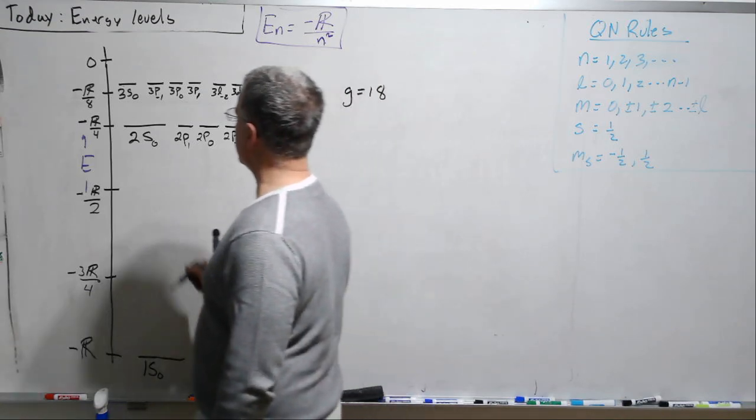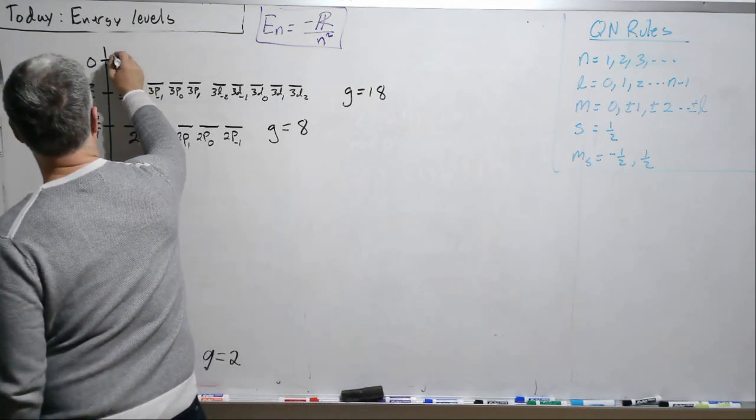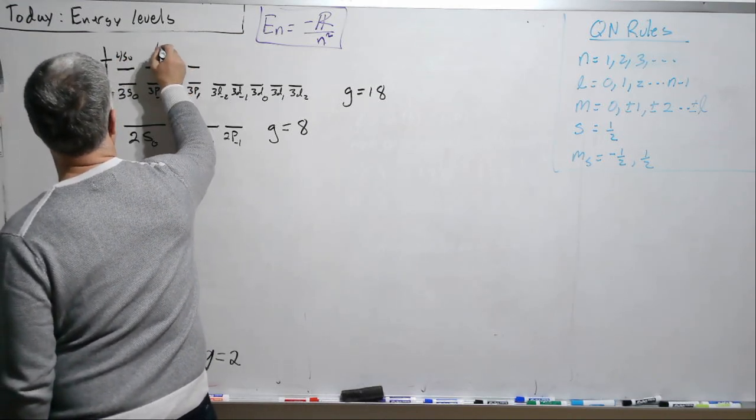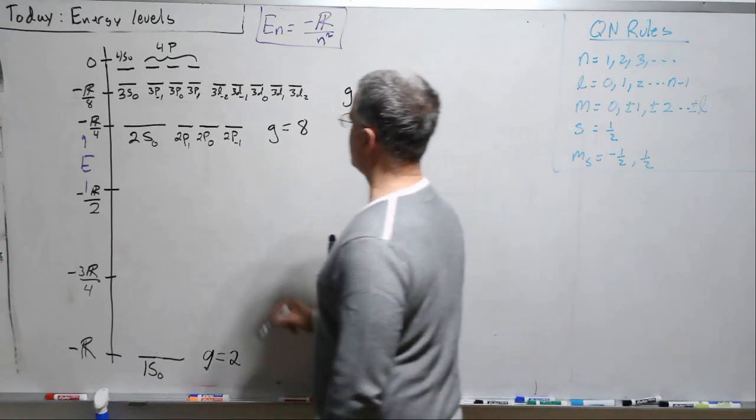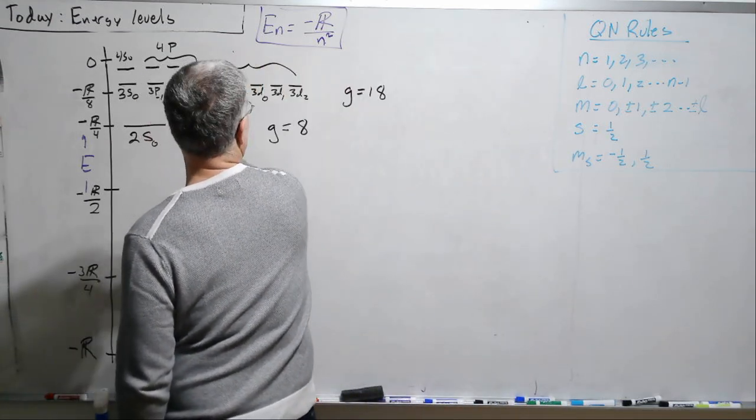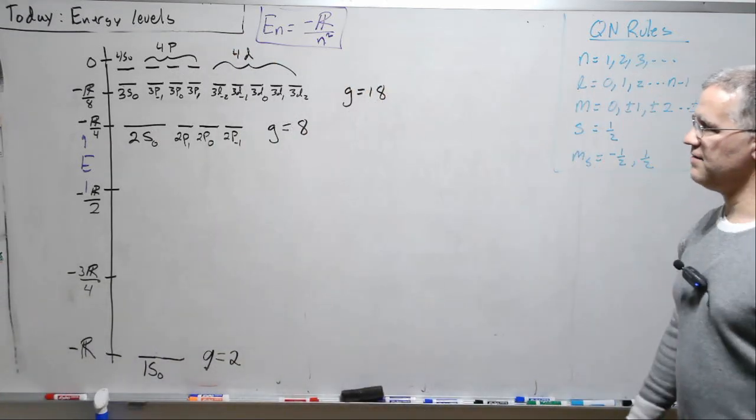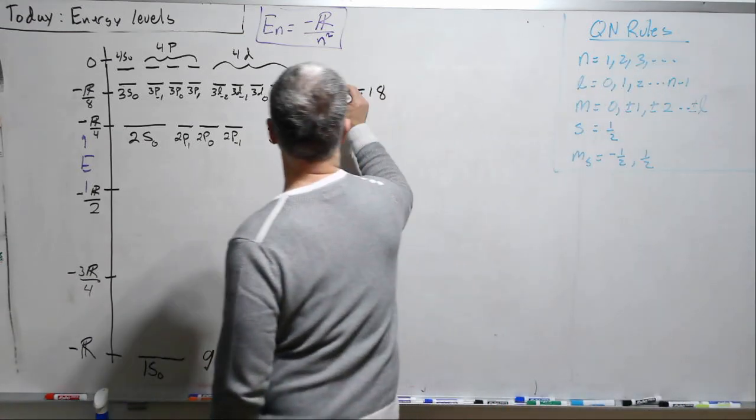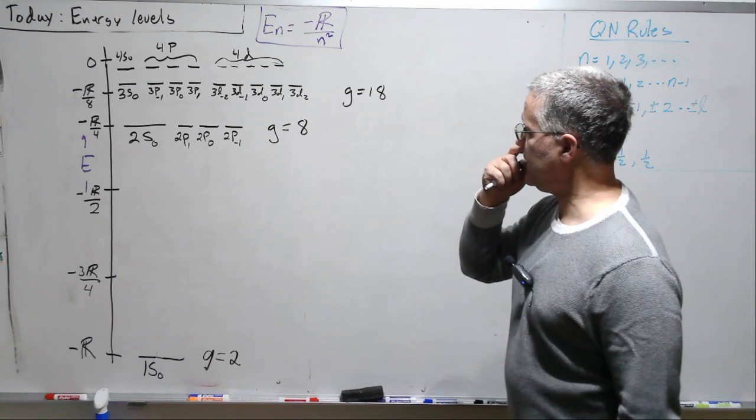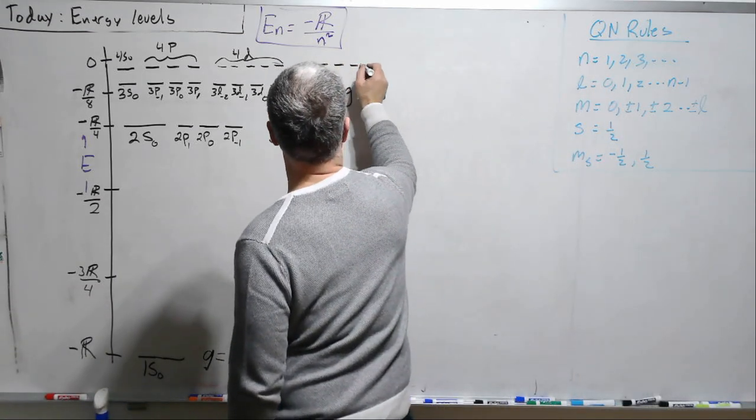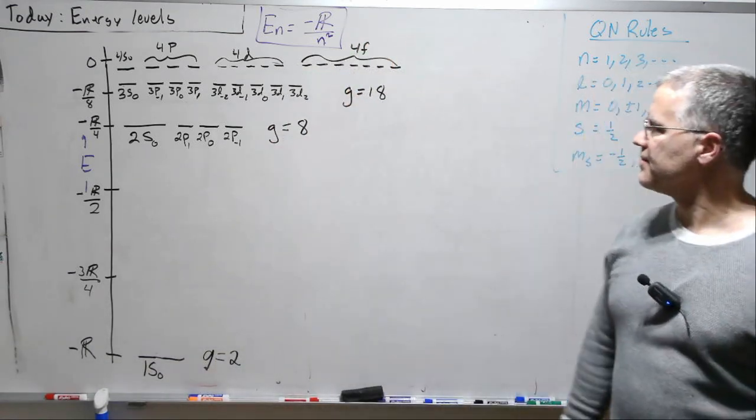And so, looking at our pattern, the next state would be one-sixteenth, and we would get a 4S0. We'll get three 4Ps. We will get five 4Ds. And seven 4Fs, okay?